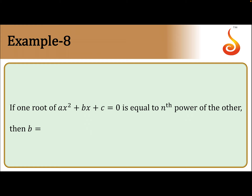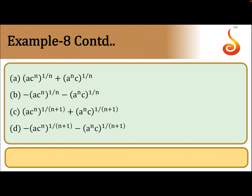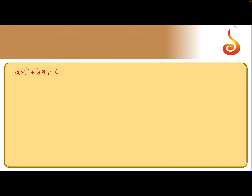Example 8: If one root of ax² + bx + c = 0 is equal to the nth power of the other, then b equals one of the given options. Let us consider one root is the nth power of the other. Given equation is ax² + bx + c = 0. Let me assume the roots as α and α^n — one root is the nth power of the other.